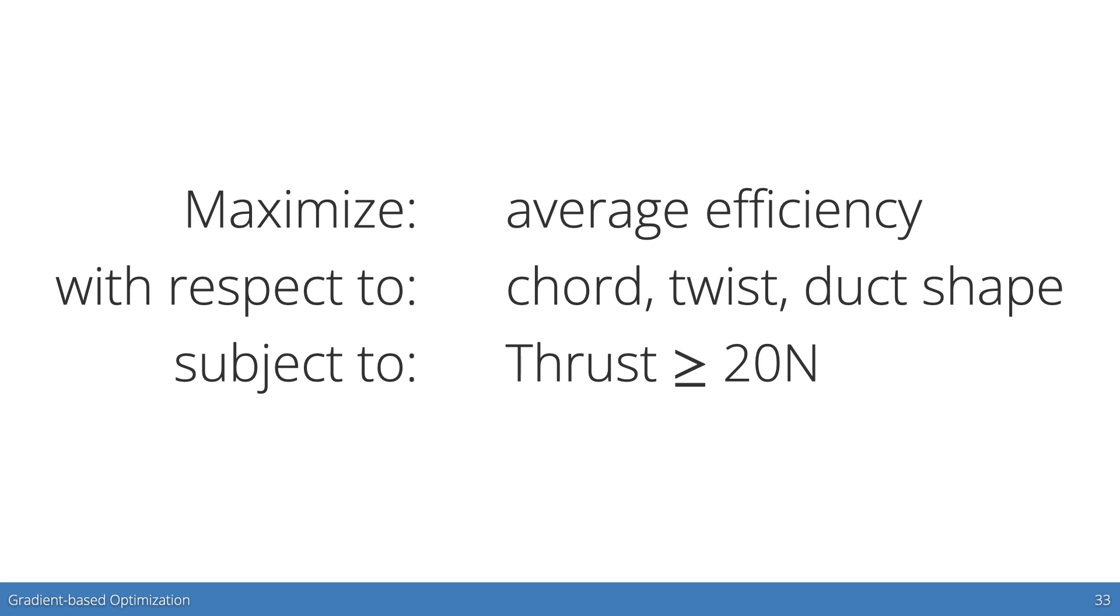The example optimization we chose to perform is an average efficiency maximization with respect to chord and twist distributions along the rotor, as well as duct shape parameters, and subject to a minimum thrust constraint.